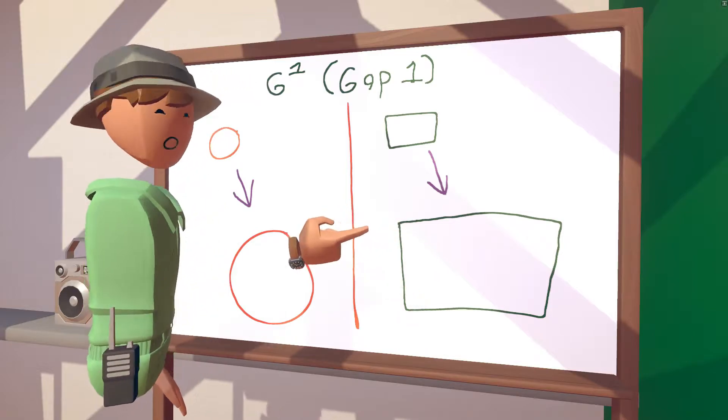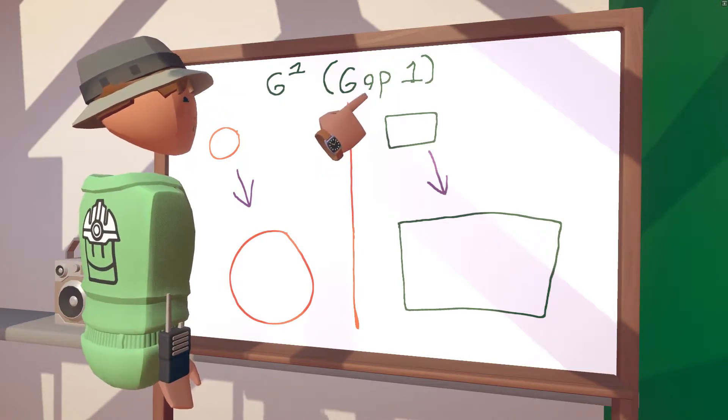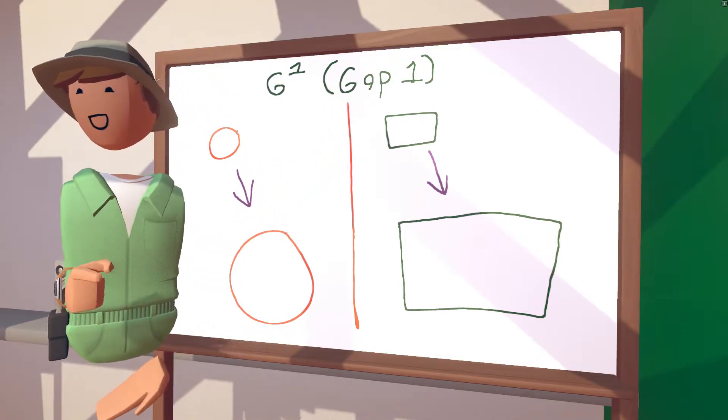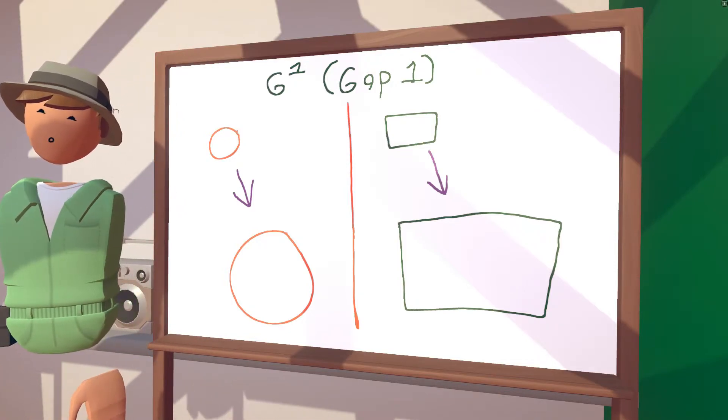And despite all the growing that occurs in G1, the G actually stands for gap and not grow. And the gap is referring to the gap before the next section in the cell cycle.